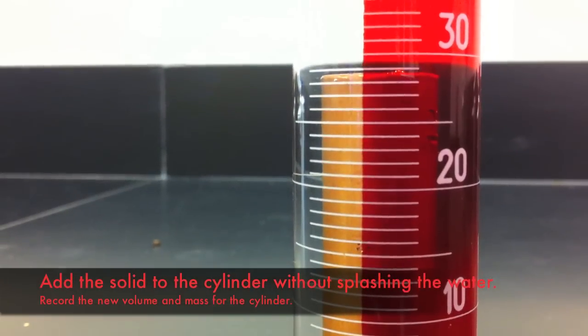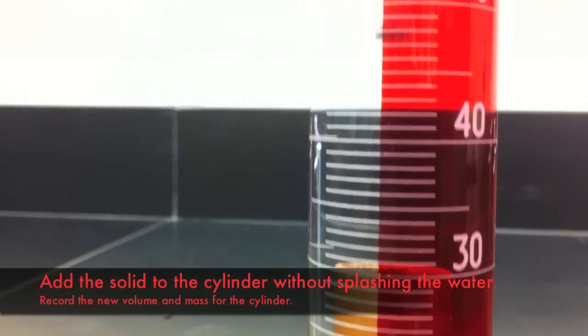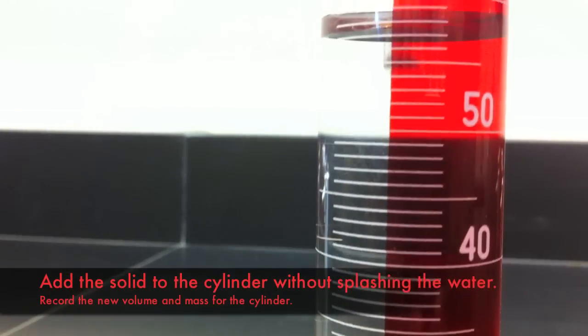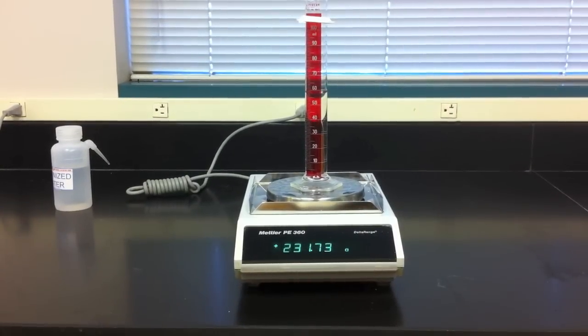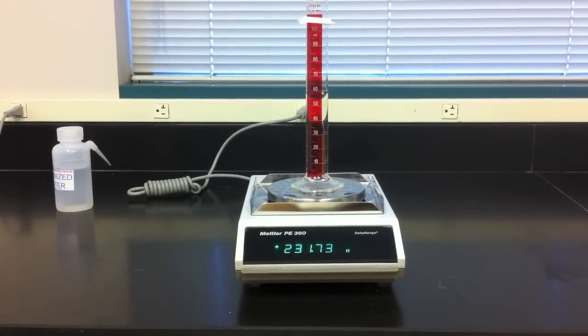With the solid in the graduated cylinder, remeasure the volume of liquid in the cylinder. The difference between this reading and the original reading is the volume of the solid. The difference in mass of the cylinder from the original weight is obviously the weight of the solid.